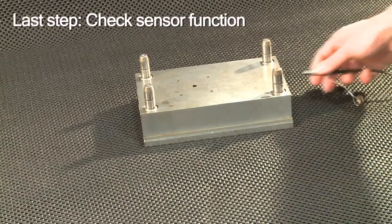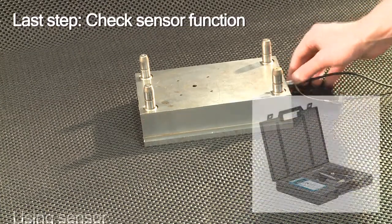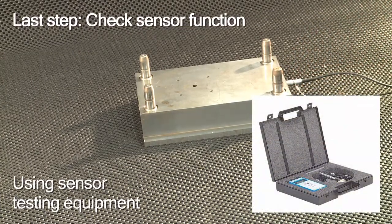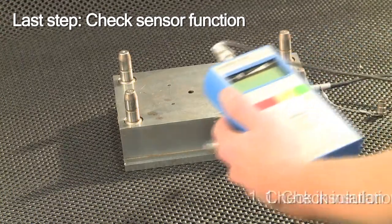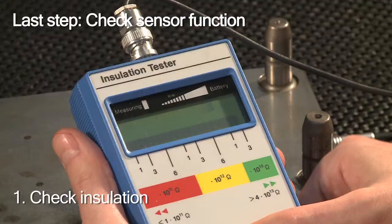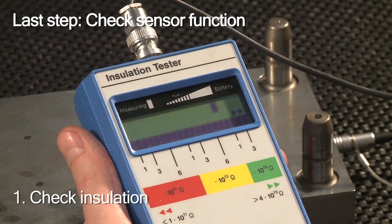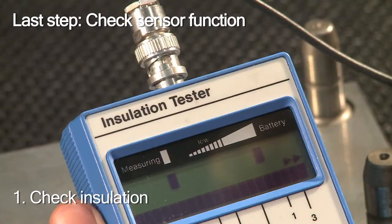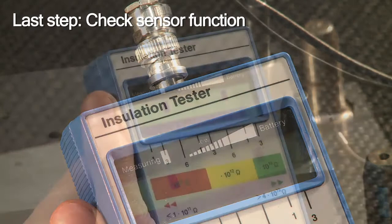To be sure that the installation was successful, you make use of Kistler's sensor testing equipment. First, you check the insulation. The bar has to be well into the green field. If it's not, insulation is insufficient. The sensor requires service.